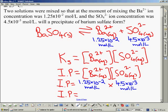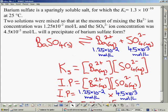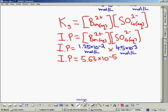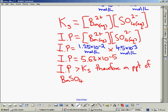We compare the IP value to the KS value for what we were given. The IP value was much much higher in this case. Because the IP is greater than KS, a precipitate forms.